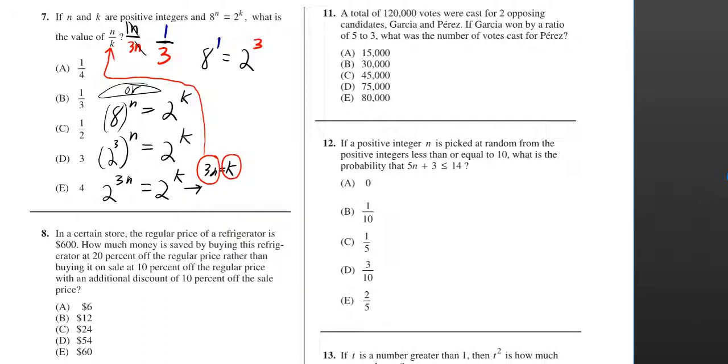Well that means 3n would have to equal k. And then what you can do with that is say that k is the same thing as 3n.